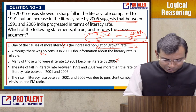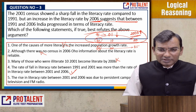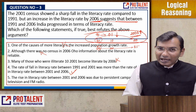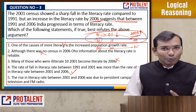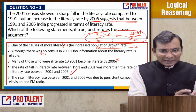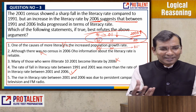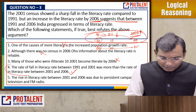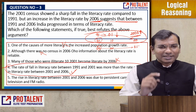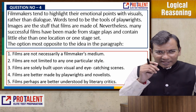Option four perfectly refutes the argument, because if the fall from 1991 to 2001 was greater than the rise from 2001 to 2006, then the 2006 level is still below the 1991 level, which contradicts the claim of overall progress. Option five about television and FM radio campaigns is immaterial — what matters is the numerical movement between periods. So the answer is four.